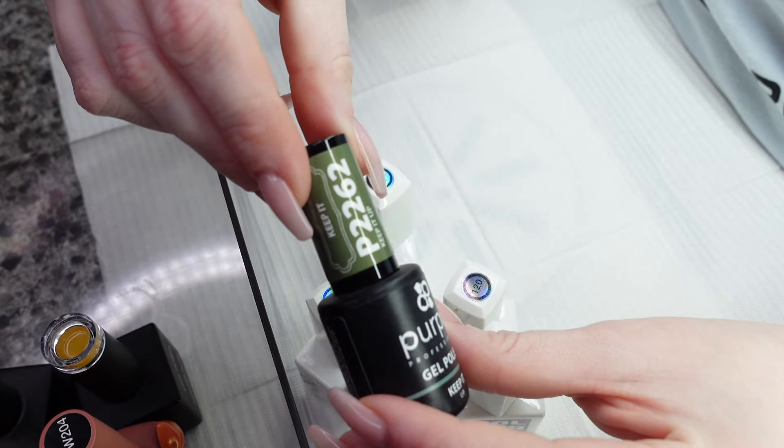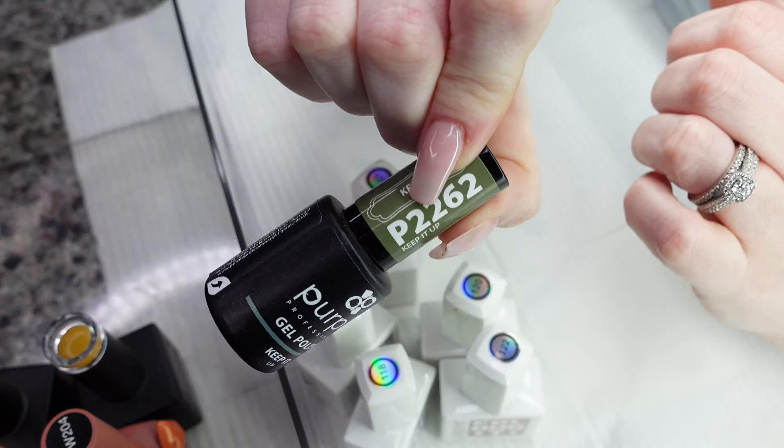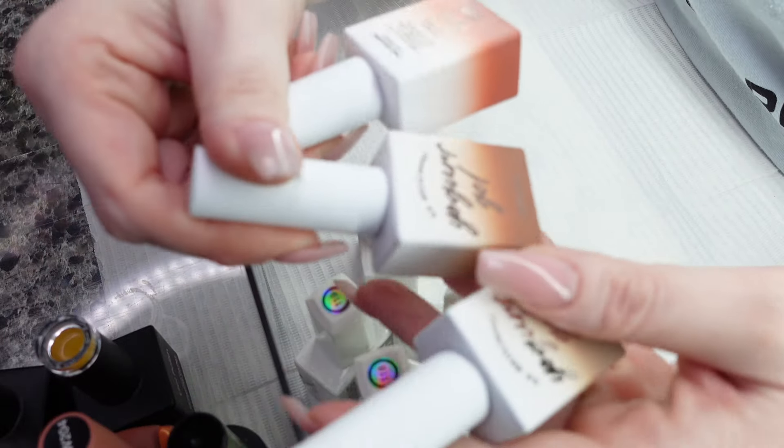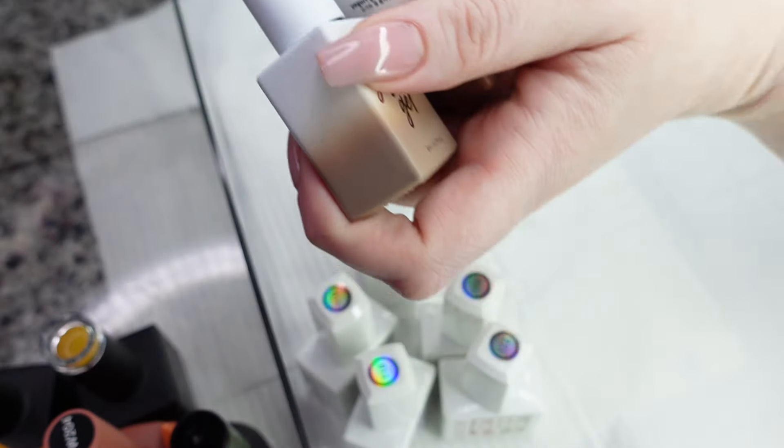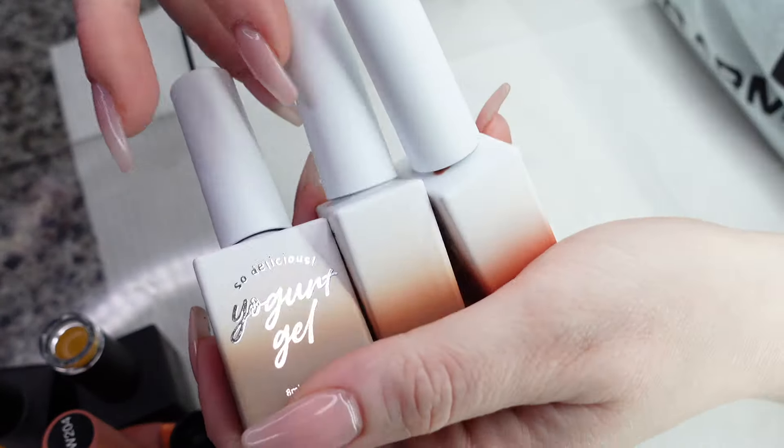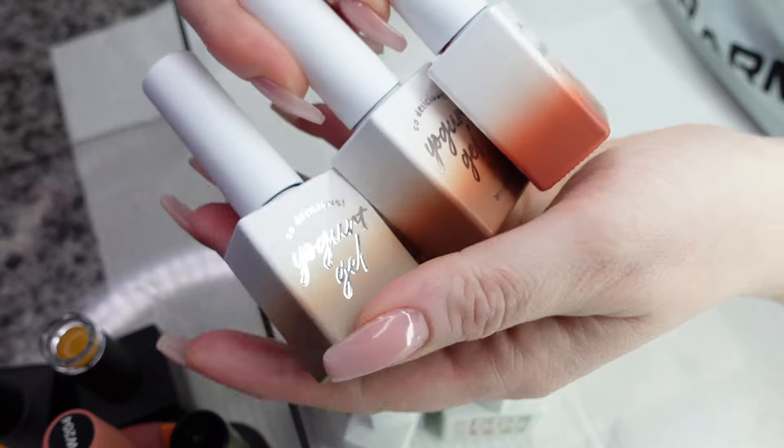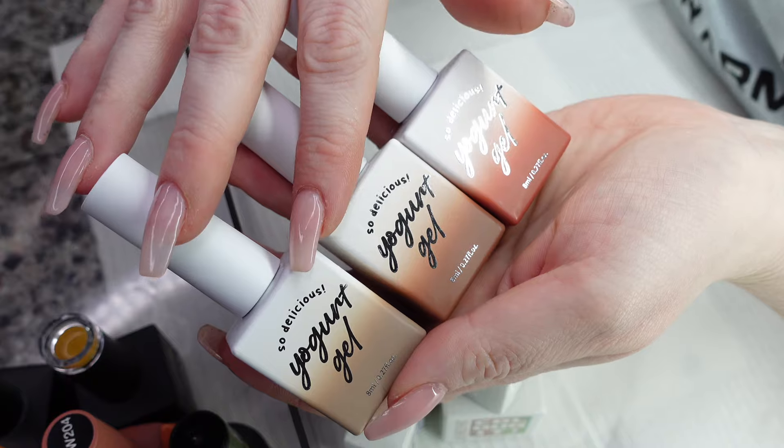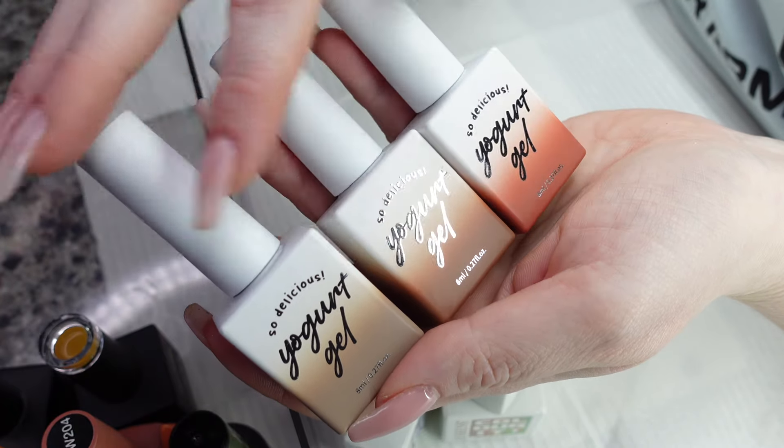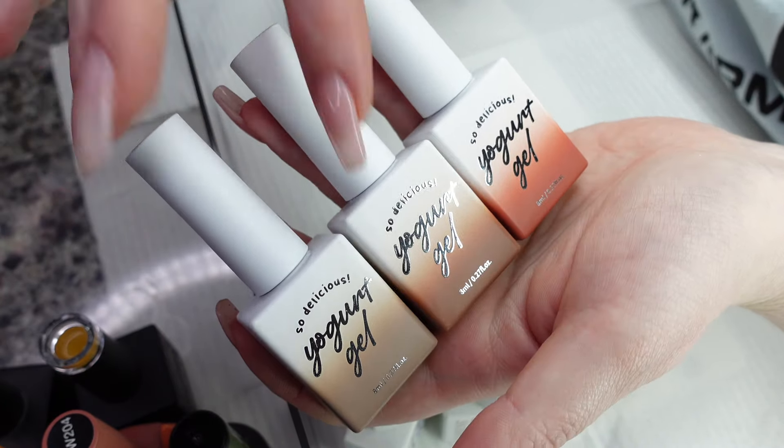Then P2262 from Purple Professional. New to my collection this year. These are from the Cookie Bear collection from Yogurt Gel. Oh my gosh, my cats. This is probably becoming my favorite brand on the market.